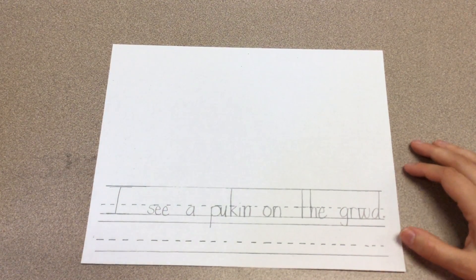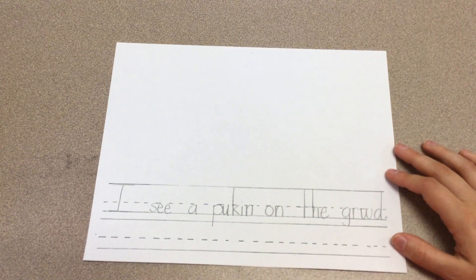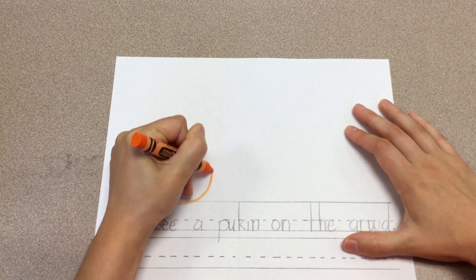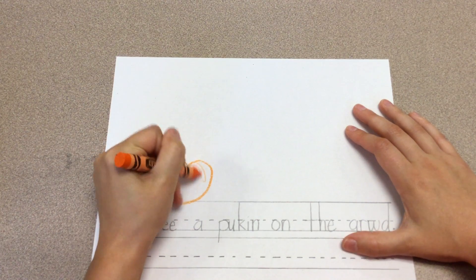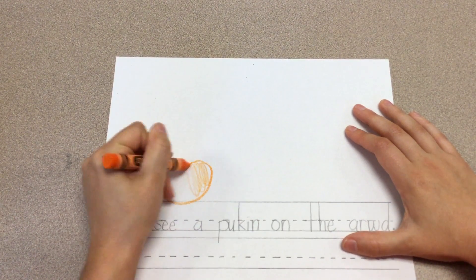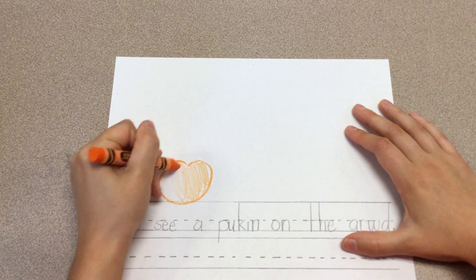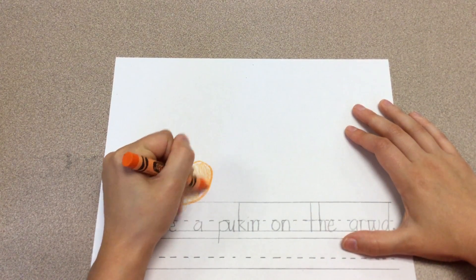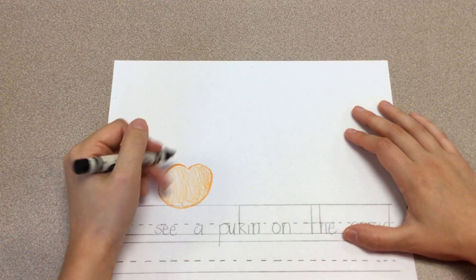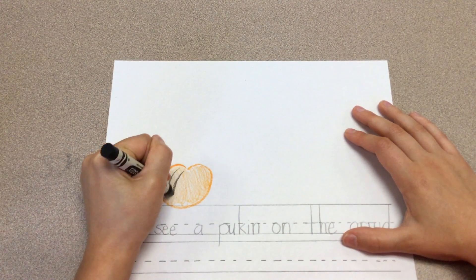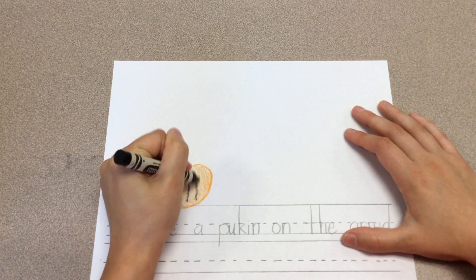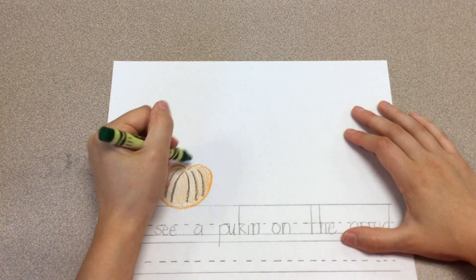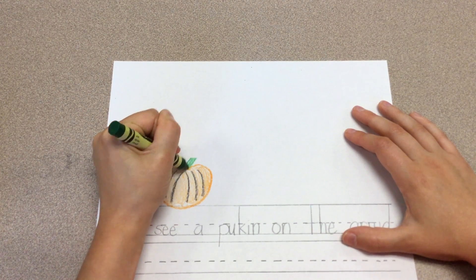Okay, now I can draw a picture to match my sentence, right? So I'm gonna draw a pumpkin. Maybe I can add—I can put it on a pumpkin vine.